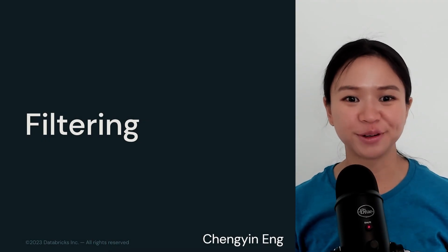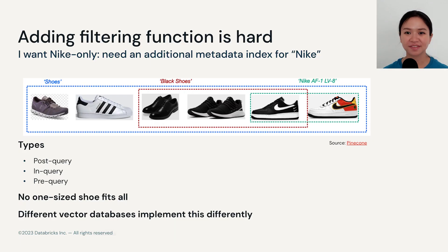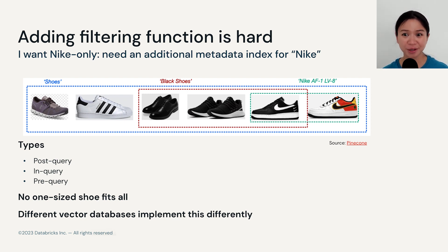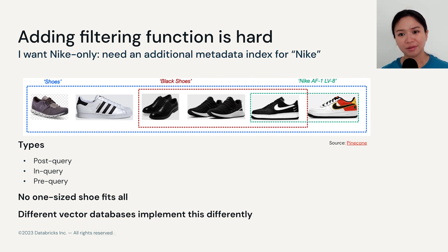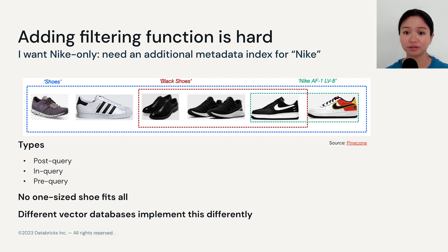Let's now talk about filtering. As I mentioned before, adding a filtering function in vector databases is actually quite hard, and different vector databases also implement this differently as well. There are largely three categories of filtering strategies: you can either do filtering post-query, in-query, or pre-query. But there are also vector databases which implement their own proprietary filtering algorithms grounded in one of these as well.